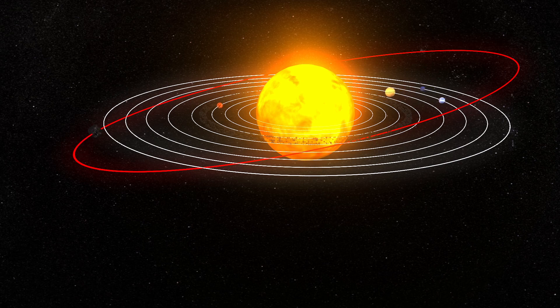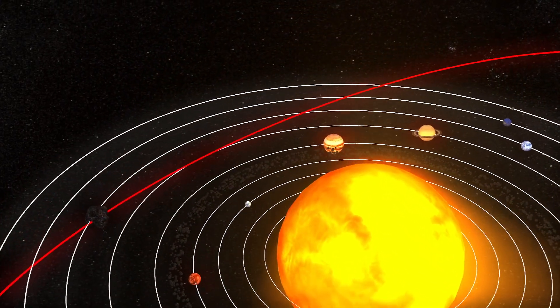While orbiting, these giant comets cross paths with the orbits of Jupiter, Saturn, Uranus and Neptune.